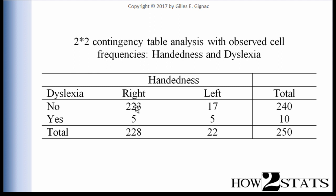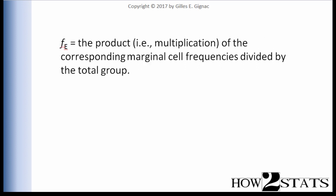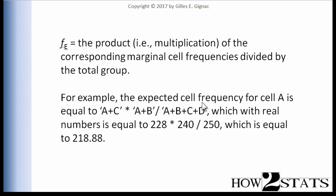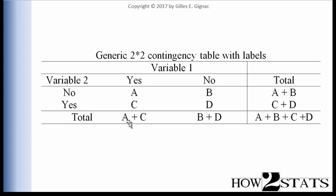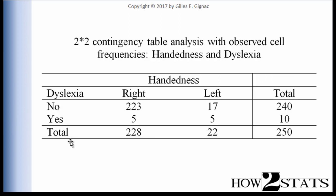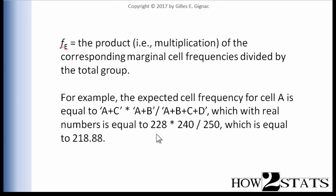Going back to the table, the expected cell frequency for cell A — right-handers without dyslexia — is the marginal frequency of 228 multiplied by the marginal frequency of 240, because it corresponds with 'no' dyslexia. So it's the intersection. We divide by 250. The expected cell frequency for cell A equals (A+C) × (A+B) divided by N — that is 228 × 240 ÷ 250 = 218.88.